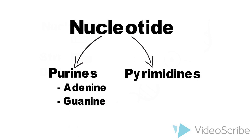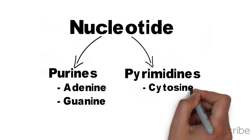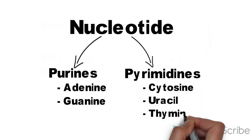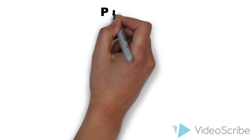The three pyrimidines are cytosine, uracil, and thymine.